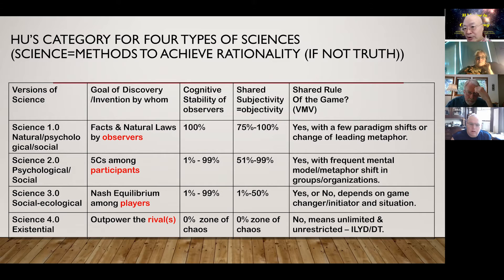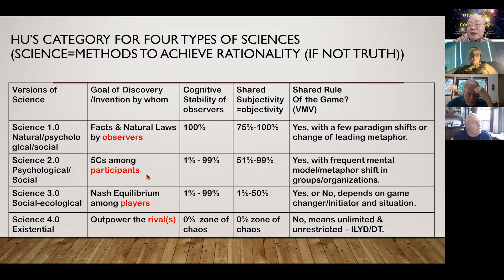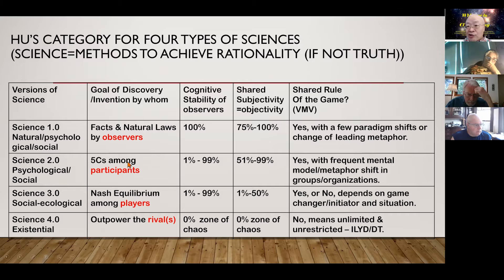Here I call it 5C. Starting from cognition — one brain — then two brains means communication, more than two brains means consensus building, then you can go to coordination, and even co-construction of your community. The role is no more observer — it becomes participant. That's the 'P' in ToP, the Technology of Participation.